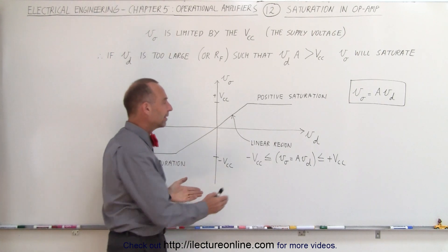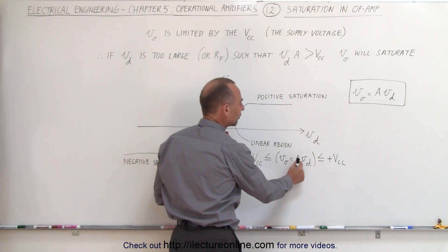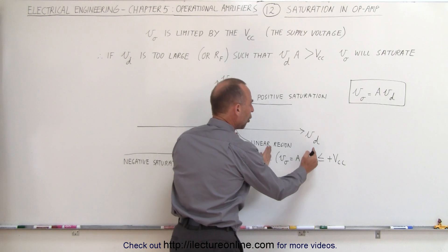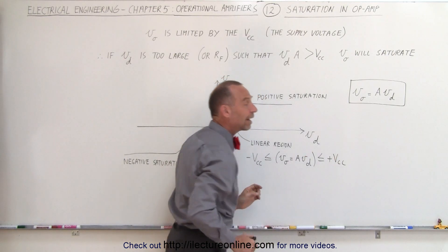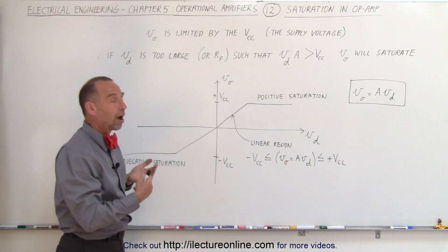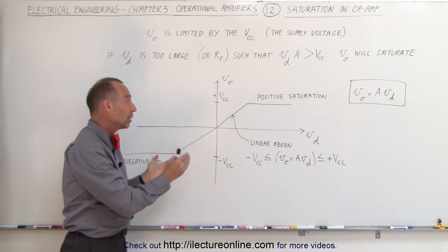That means the output voltage, which is a product of the open loop gain and the voltage difference, always must be between those two values, and typically we try to operate the operational amplifier between those two values.